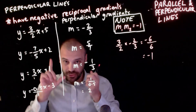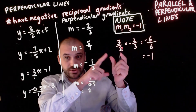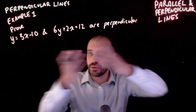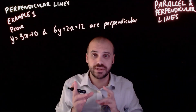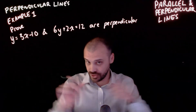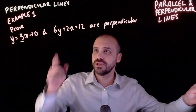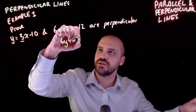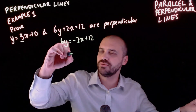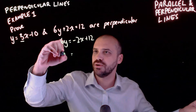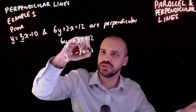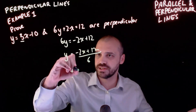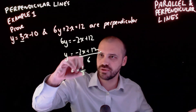For perpendicular lines, the two gradients multiplied together always equal negative 1. To prove that two lines are perpendicular, I need to show their gradients are negative reciprocals. The gradient of y equals 3x is 3. For the second equation, 6y equals negative 2x plus 12 - divide both sides by 6 to get y equals negative 2x plus 12 over 6. Negative 2 divided by 6 is negative 1/3 x.